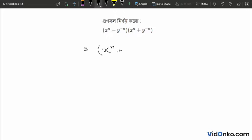We have x to the power n plus y to the power minus n, into x to the power n minus y to the power minus n. Let me clean this up and put a border line.